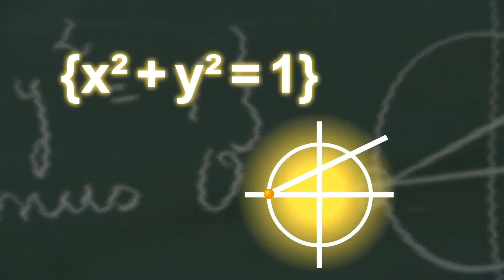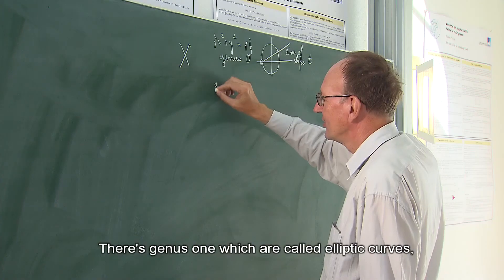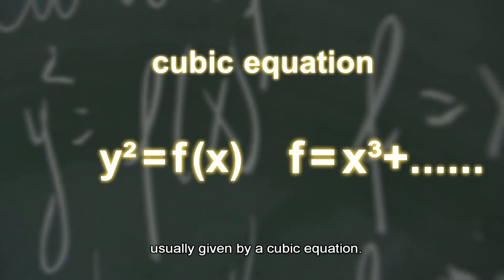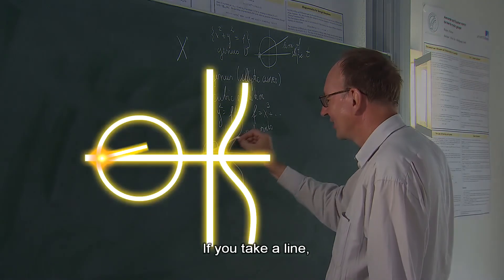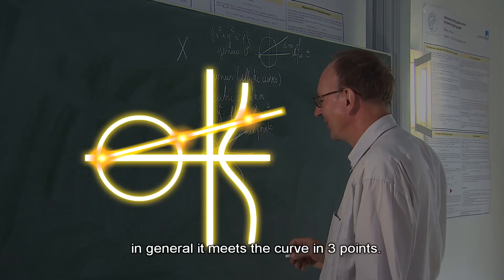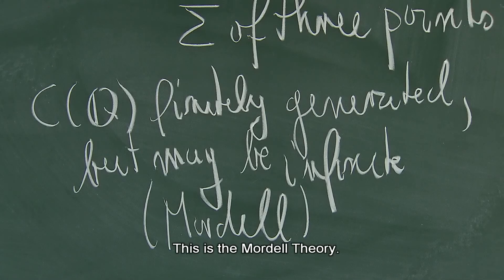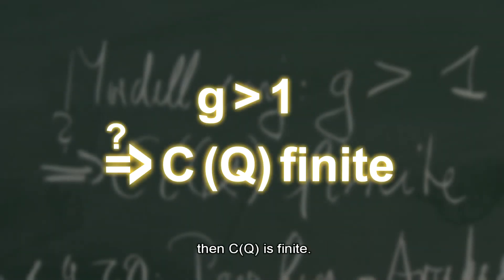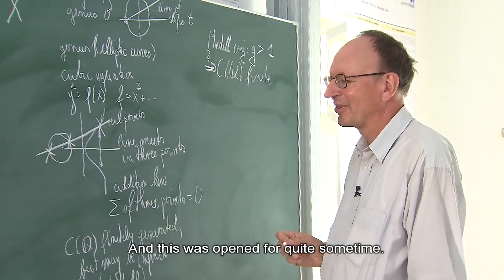The Mordell conjecture was about algebraic curves. There are genus-one curves, which are called elliptic curves, usually given by a cubic equation. If you take a line, in general it meets the curve in three points — they form an abelian group. This is the Mordell theorem. So if the genus is bigger than one, then C of Q is finite.